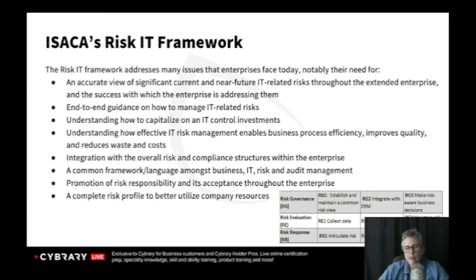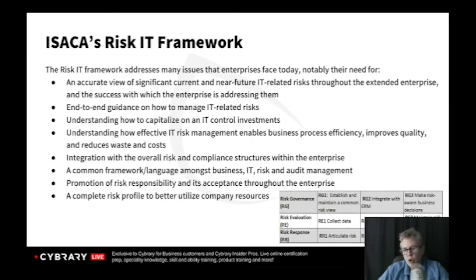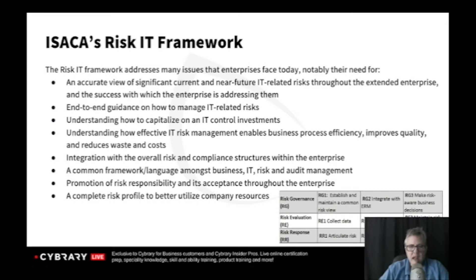What we ultimately want is to move to the right. With risk governance, the first thing we have to do is make sure we establish and maintain a common risk view. The governing entities need to make sure we understand the risk context and risk view of our organization. Then it's the responsibility of governance to incorporate that throughout the organization — that's enterprise risk management, or ERM. Then as we move on to RG3, risk governance three, we're looking to make risk-aware business decisions.